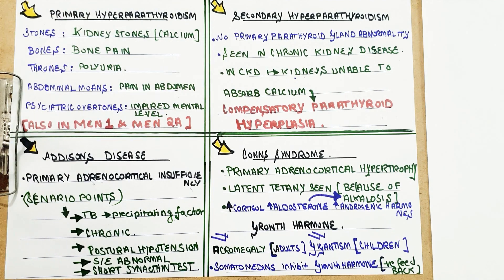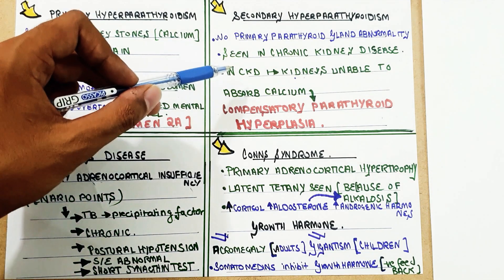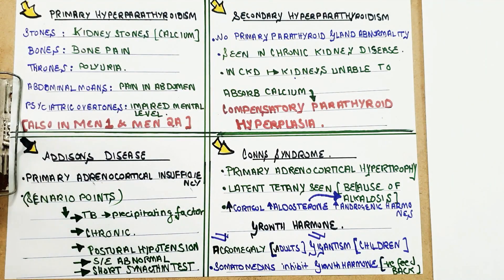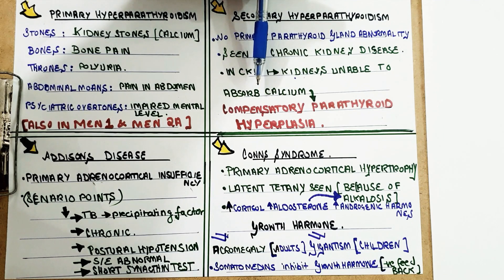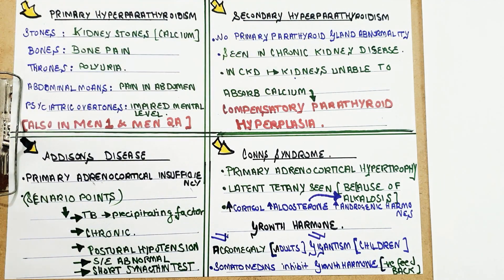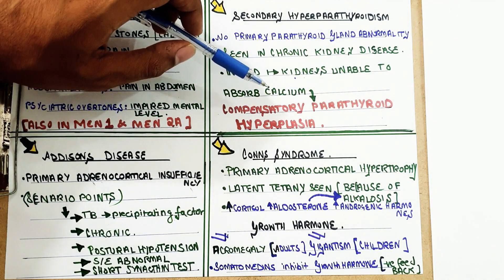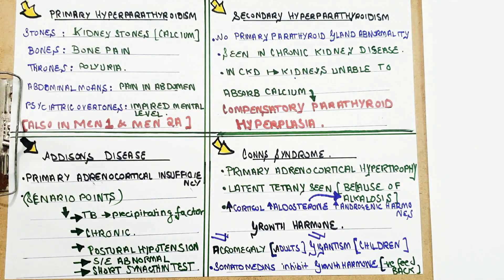Secondary hyperparathyroidism is seen mainly 90% of the time in CKD — chronic kidney disease. In CKD, the kidney is unable to absorb calcium, leading to compensatory parathyroid hyperplasia. This compensatory parathyroid hyperplasia causes secondary hyperparathyroidism.